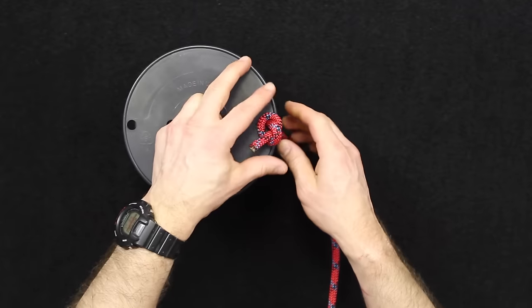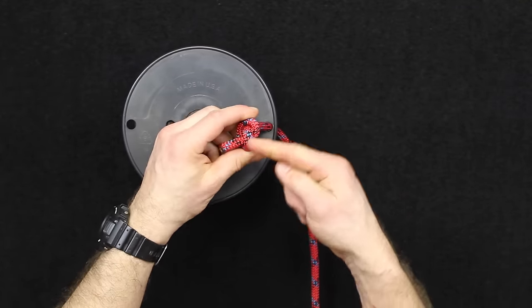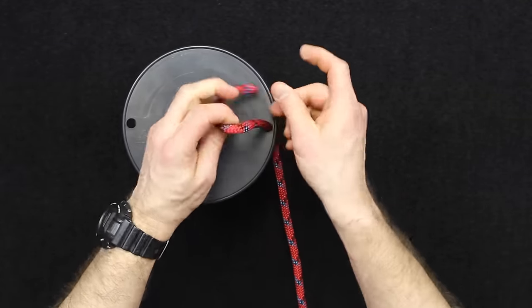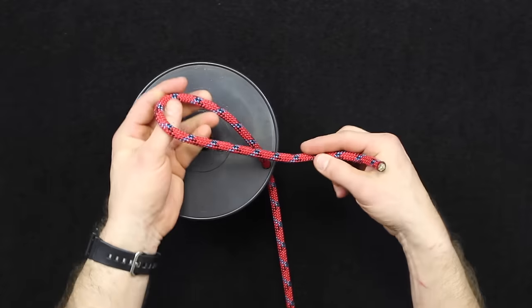One of the problems with an overhand knot is that if it's under load or continuous load, it can sometimes be pretty difficult to untie. A technique for getting around that is to tie a slipped overhand knot.